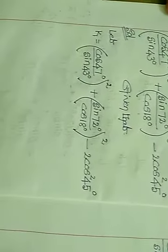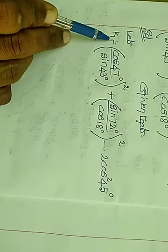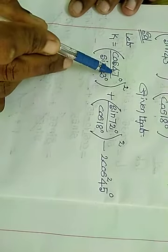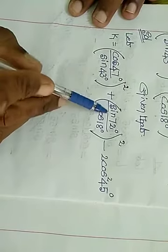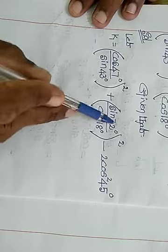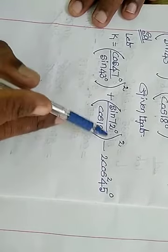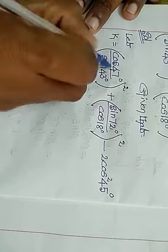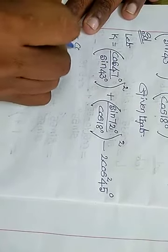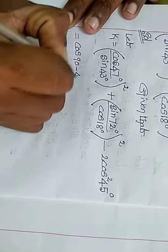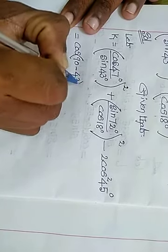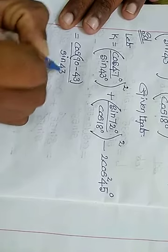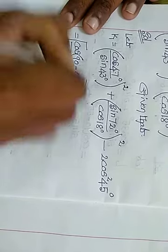The value of cos 47 degree — 47 and 43 add up to 90 — this is the complementary angle identity we can use. So cos 47 = cos(90 minus 43), divided by sin 43.